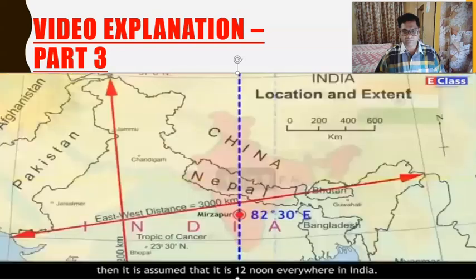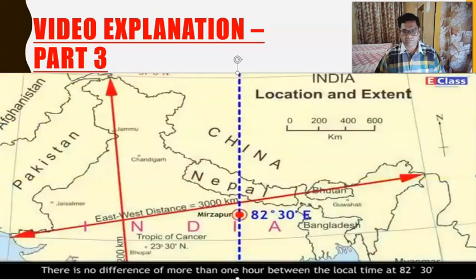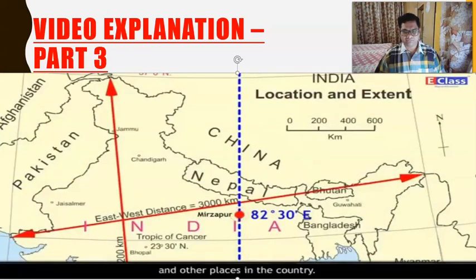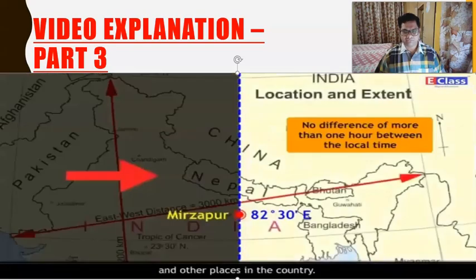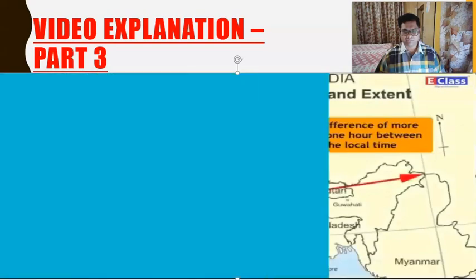When the sun is directly overhead on this longitude, it is assumed that it is 12 noon everywhere in India. There is no difference of more than one hour between the local time at 82° 30' and other places in the country.